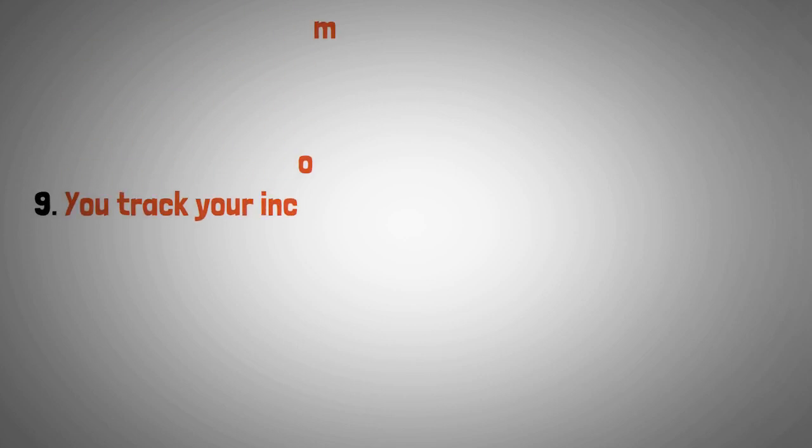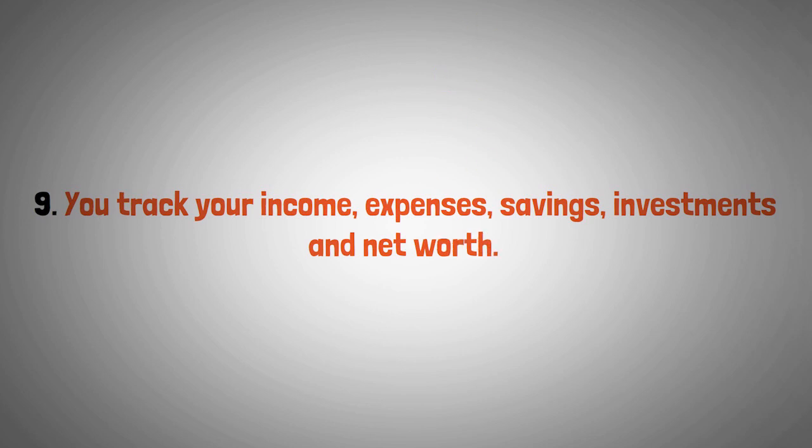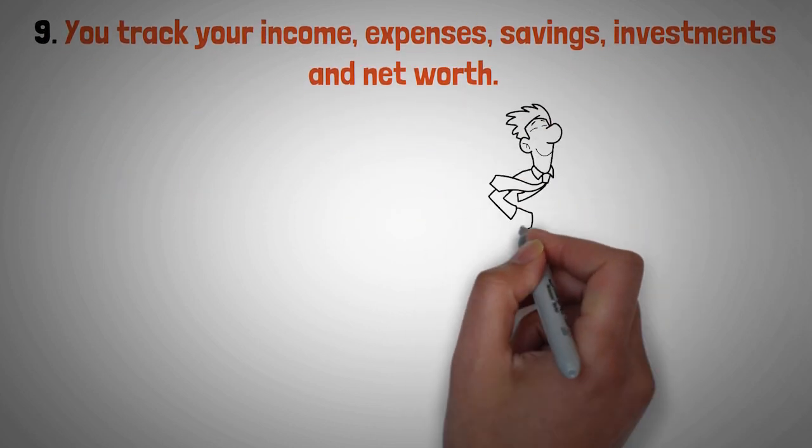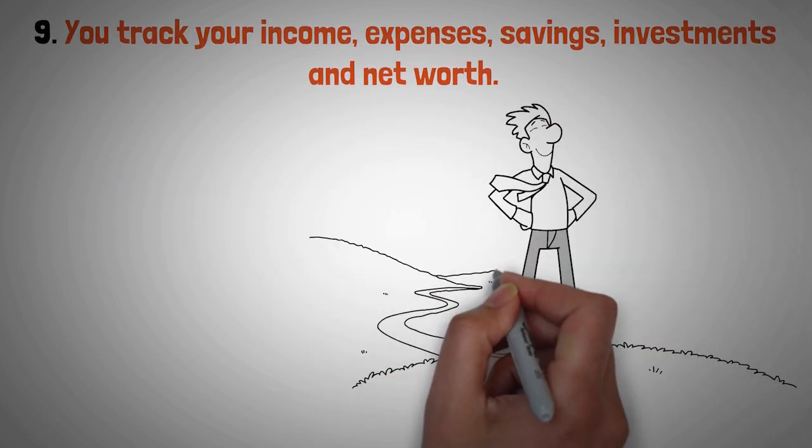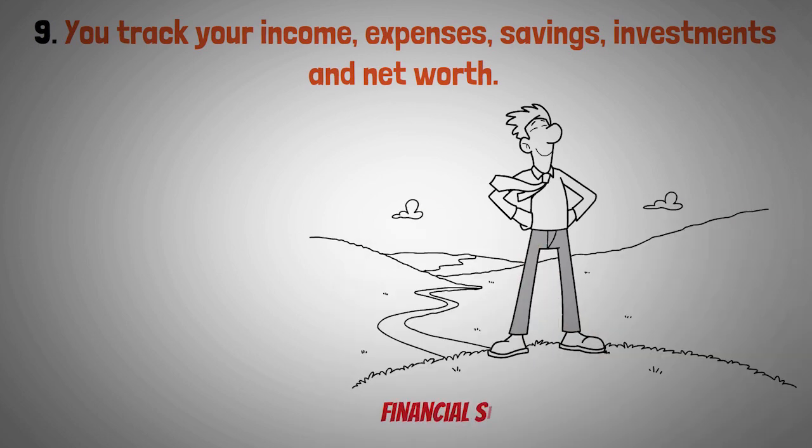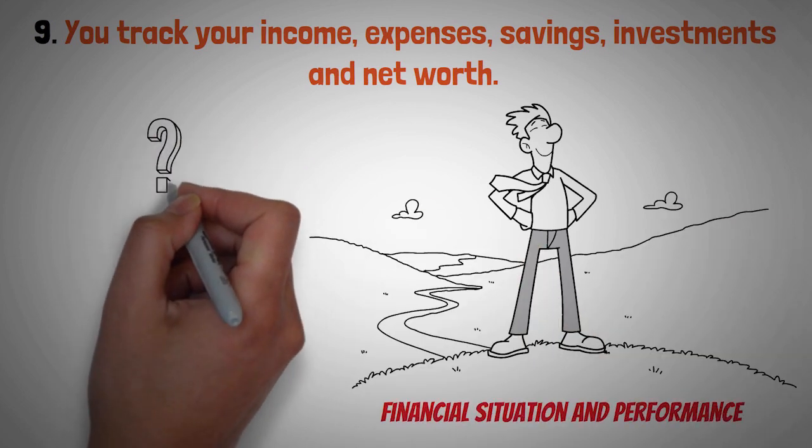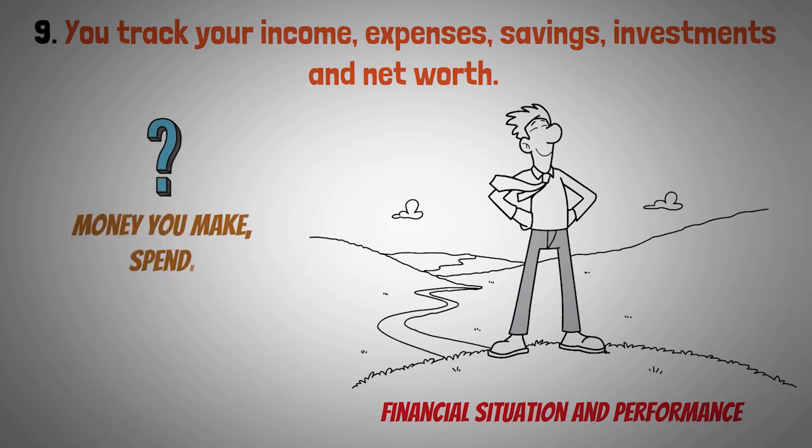Number nine: you track your income, expenses, savings, investments, and net worth. You don't gamble, you manage. You have a clear and accurate picture of your financial situation and performance. You know exactly how much money you make, spend, save, invest, and owe. You also know your net worth, which is the difference between your assets and liabilities.